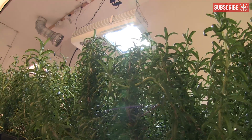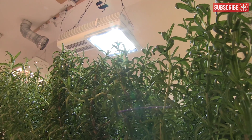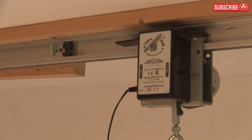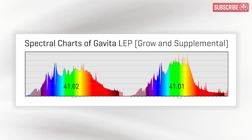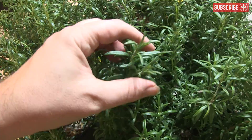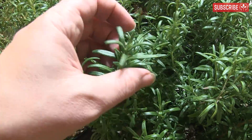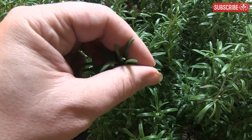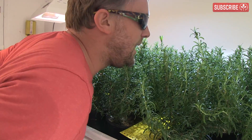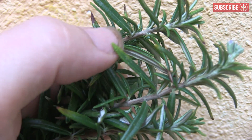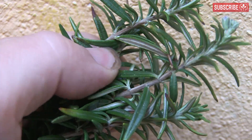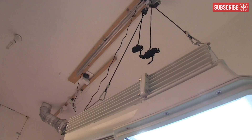Take this rosemary, for example. These cuttings have been growing under a Gavita LEP plasma on a light rail since they rooted. I'm using the 41.02 grow spectrum lamp, which has a small amount of UVB and larger amounts of UVA, similar to the sun. After two months under this bad boy, the leaves are sticky to the touch and the aromas are extremely pungent. Whereas this rosemary, grown under a spectrum lacking in UV, is not nearly so sticky or pungent.